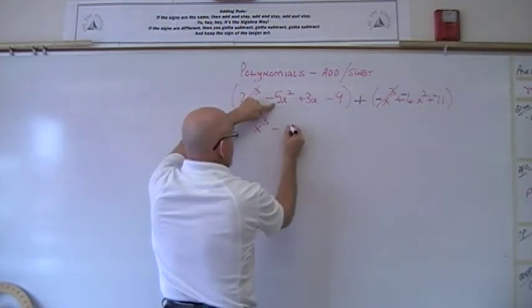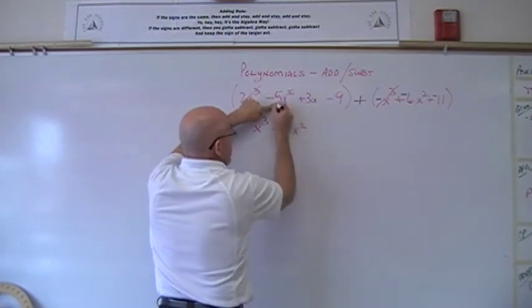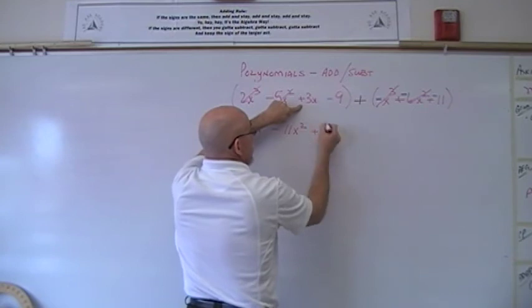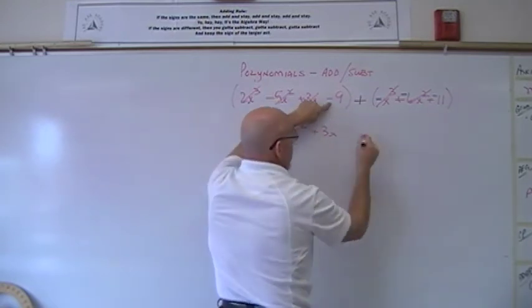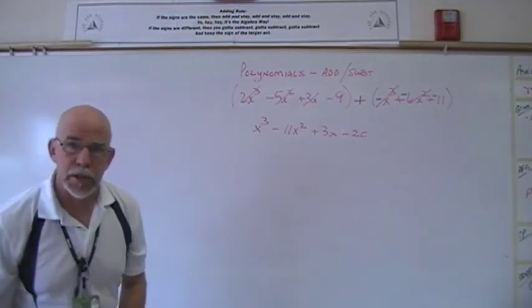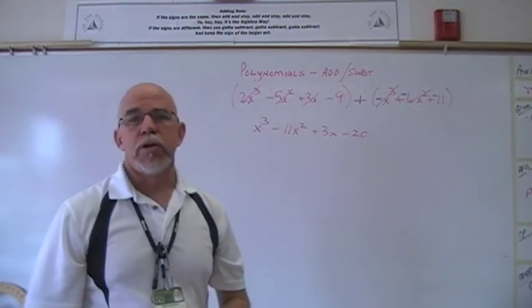Negative five and negative six. Signs are the same, so I add and stay. I still only have one x thing, so I add nothing to it. And then I have negative nine and negative eleven. There's the subtraction of those two polynomials.